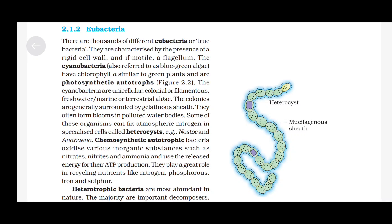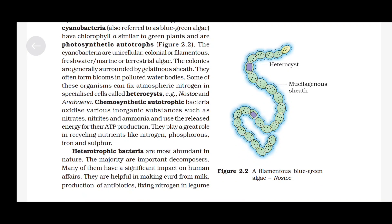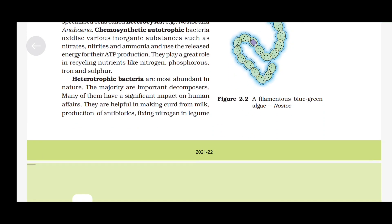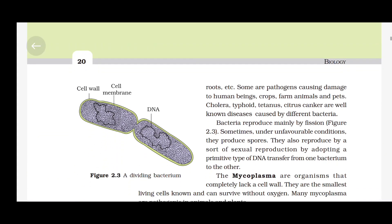Chemosynthetic autotrophic bacteria oxidise various inorganic substances such as nitrates, nitrites and ammonia, and use the released energy for their ATP production. They play a great role in recycling nutrients like nitrogen, phosphorus, iodine and sulfur. Heterotrophic bacteria are most abundant in nature. The majority are important decomposers. Many of them have a significant impact on human affairs — they are helpful in making curd from milk, production of antibiotics, fixing nitrogen in legume roots, etc.